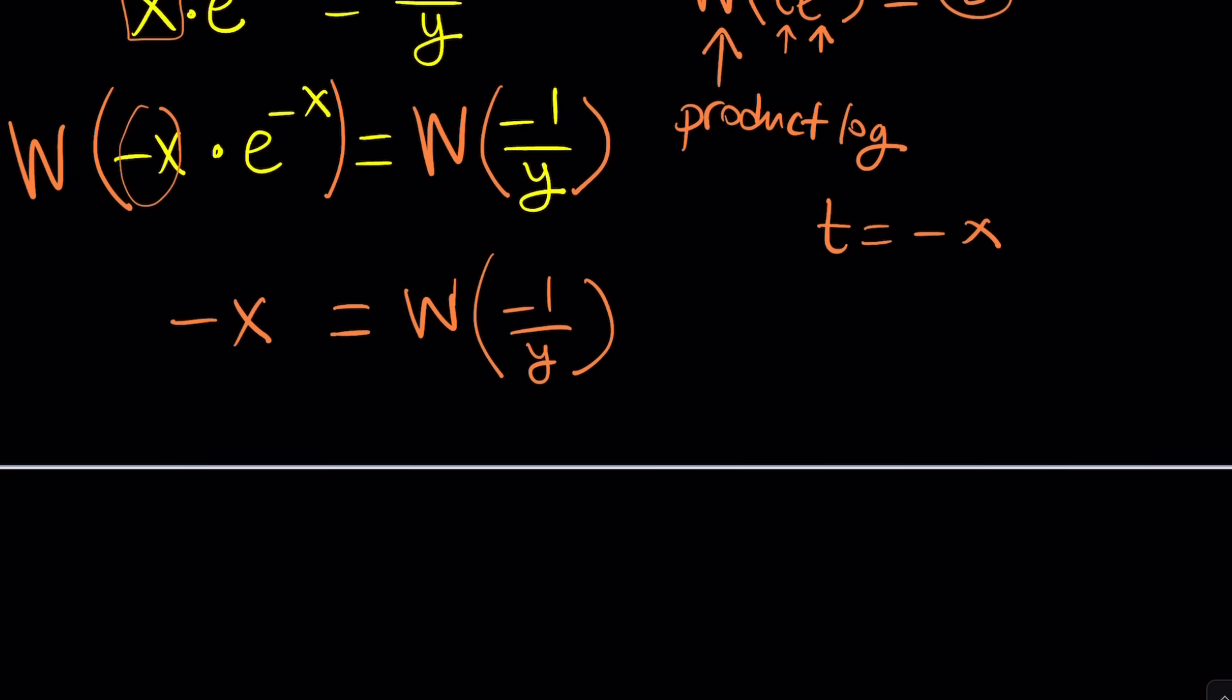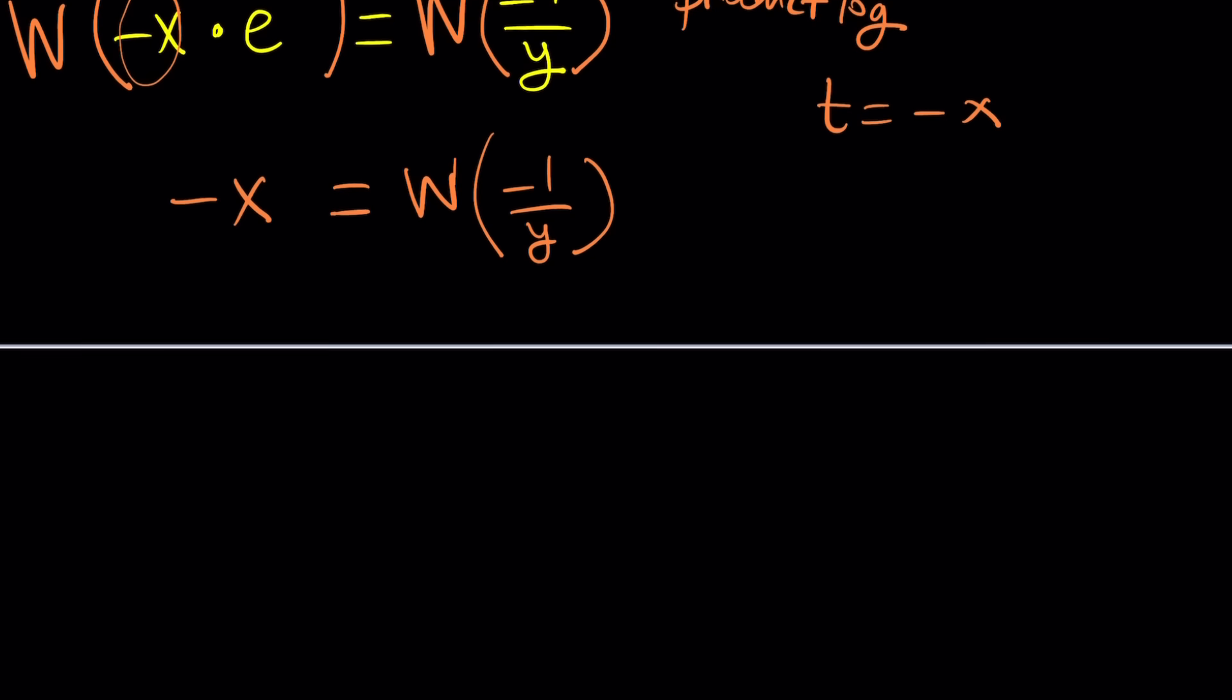What do I mean by that? We have negative x. We can multiply both sides by negative one. That'll give us x equals negative W of negative one over y. A lot of negatives, by the way, these two negatives do not cancel. Don't ever make that mistake. They don't cancel out. You have to leave it there.